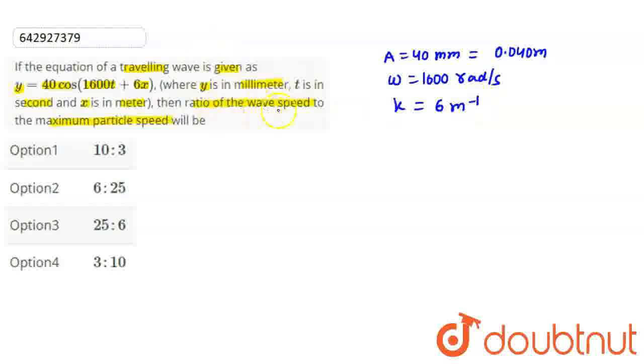Now, the wave speed V is omega divided by k. So omega is 1600 and k is 6, which gives us 1600 divided by 6 equals 800 by 3 meter per second.